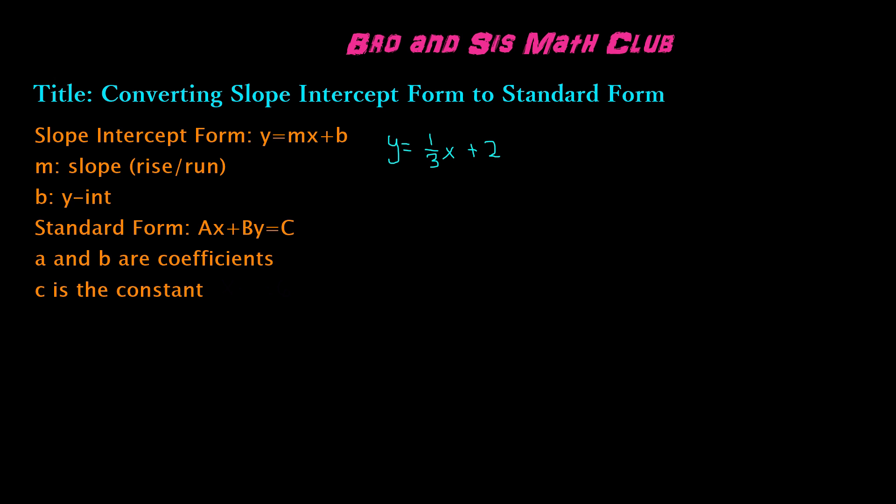The first step when converting from slope-intercept form to standard form is to get rid of any fractions, which in this case is our slope, one-third. The reason for this is because whole numbers are a lot easier to work with. In order to get rid of the one-third, we multiply by its reciprocal, which will cancel it out. So we multiply both sides by the reciprocal of one-third, which is three over one, or simply three.